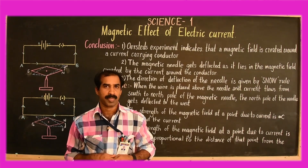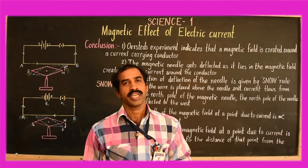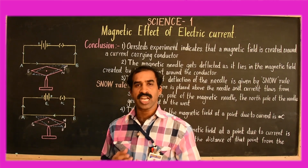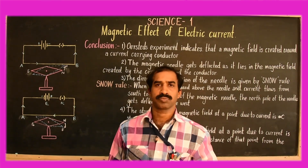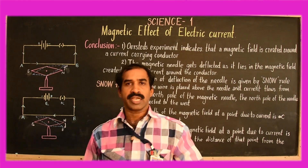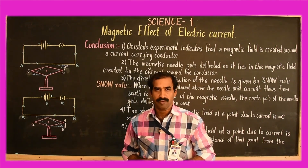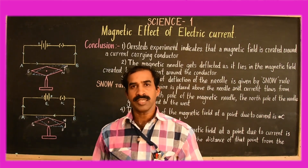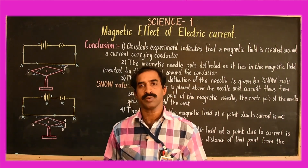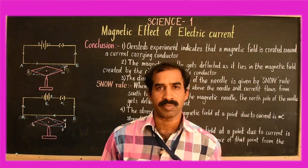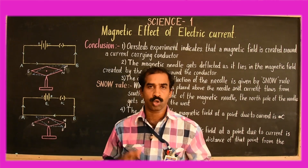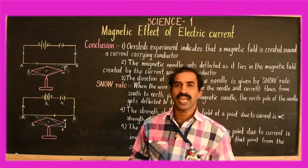On April 21st 1820, he performed an experiment to demonstrate the relation between electricity and magnetism. Earlier, before his discovery, it was believed that electricity and magnetism were two different unconnected sciences. It was he who proved that there exists some relation between electricity and magnetism and they were interconnected, which gave rise to electromagnetism.